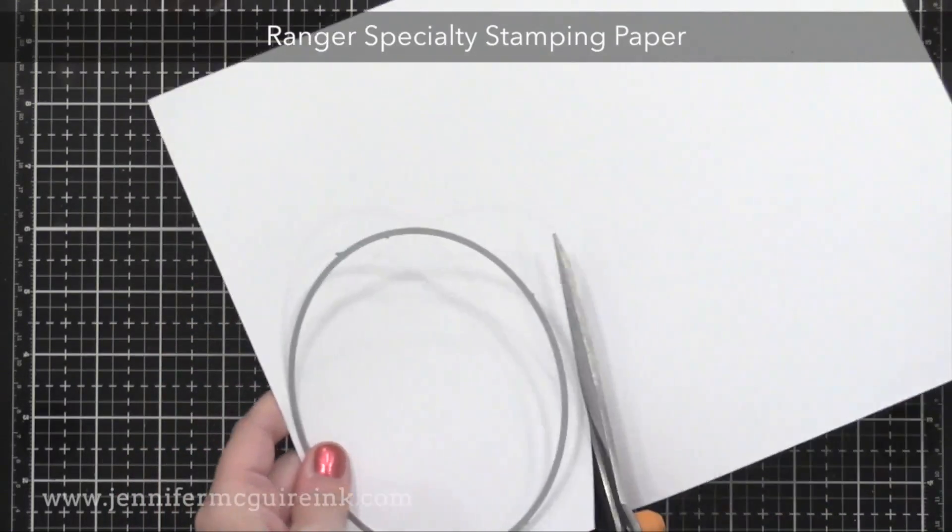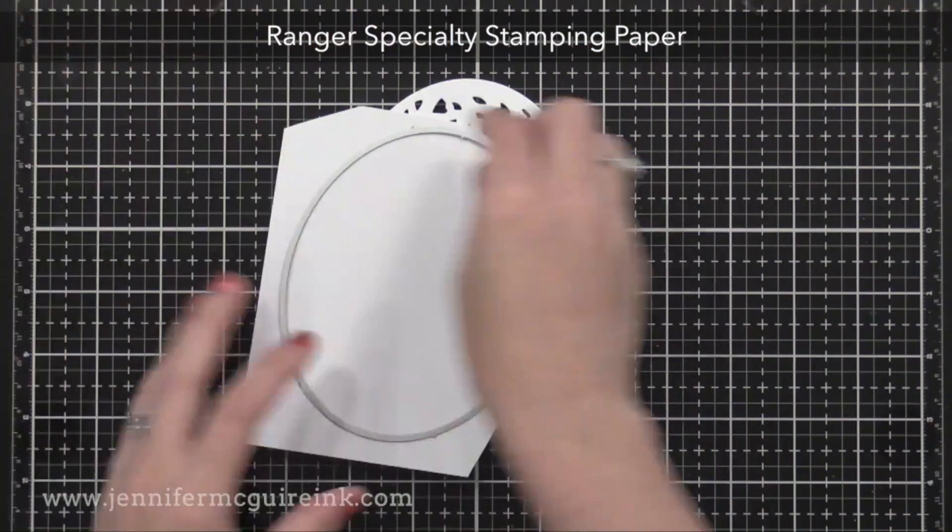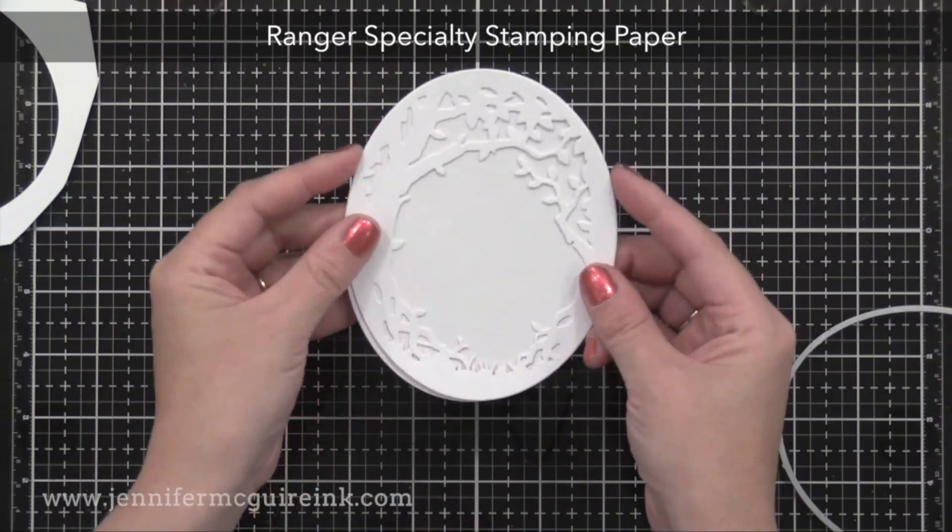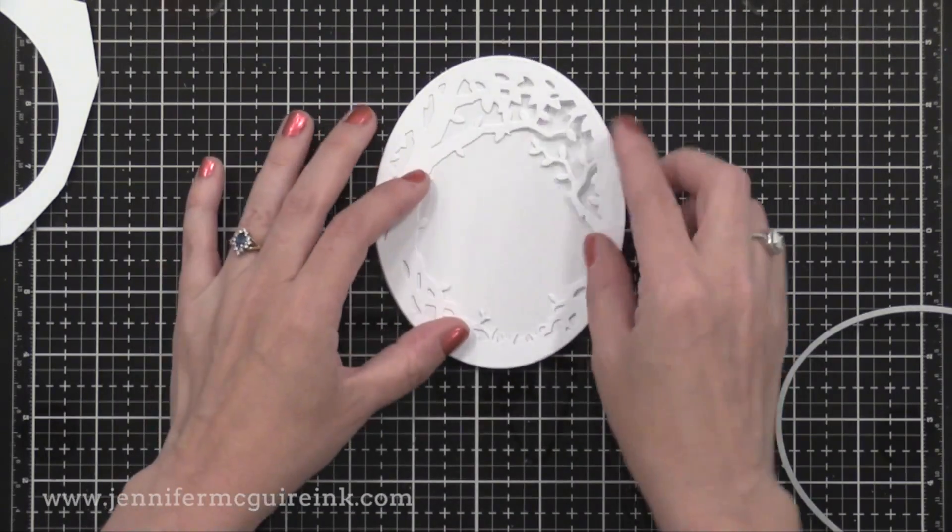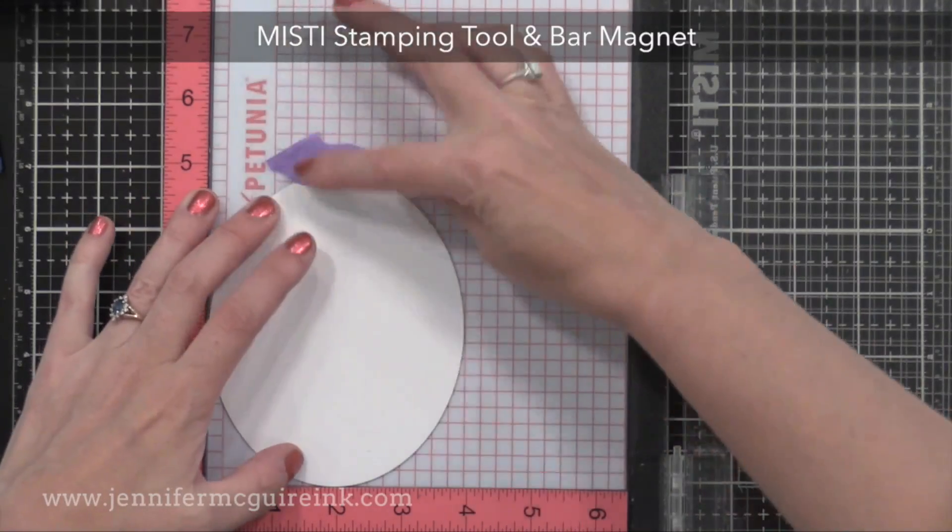Now for the actual resist technique, I'm using Ranger specialty stamping paper. This is a really cool coated card stock that is a little bit slick and is fun for techniques. If you don't have this paper you can use glossy card stock instead.